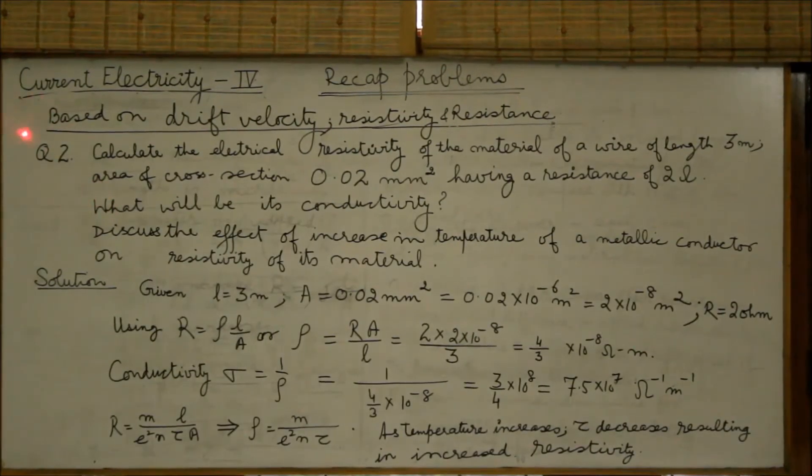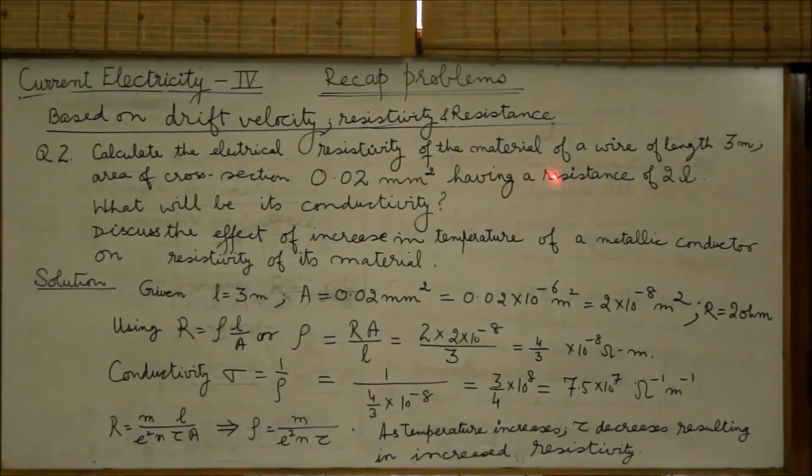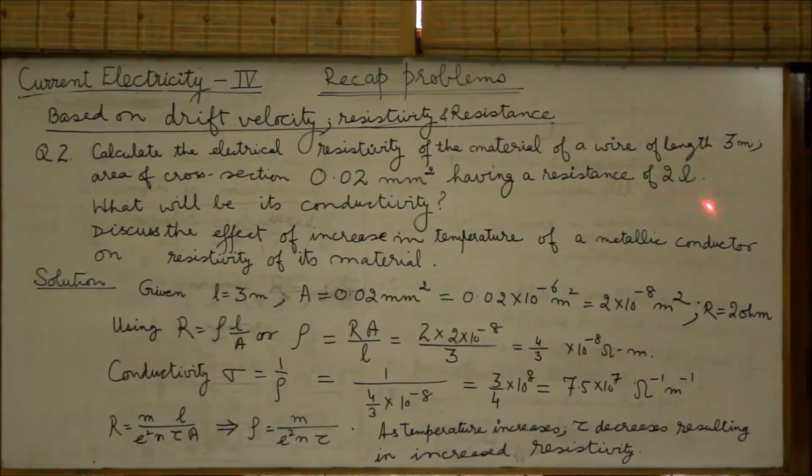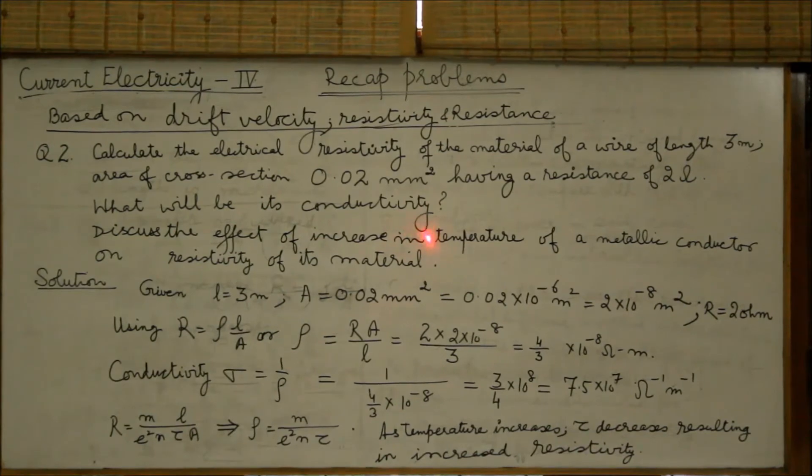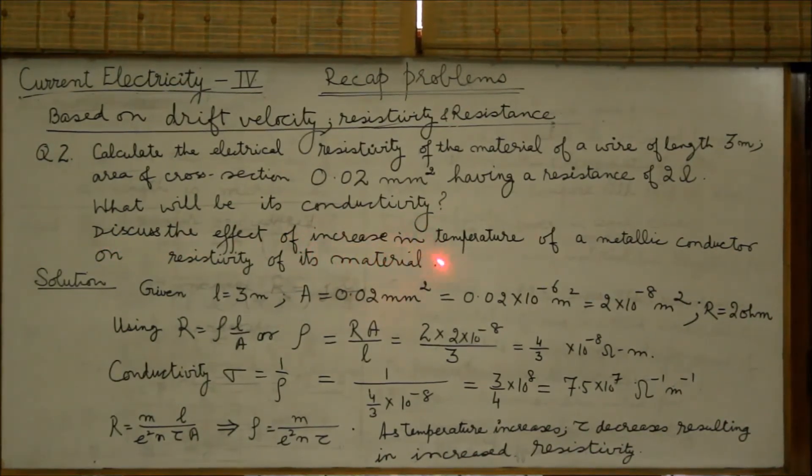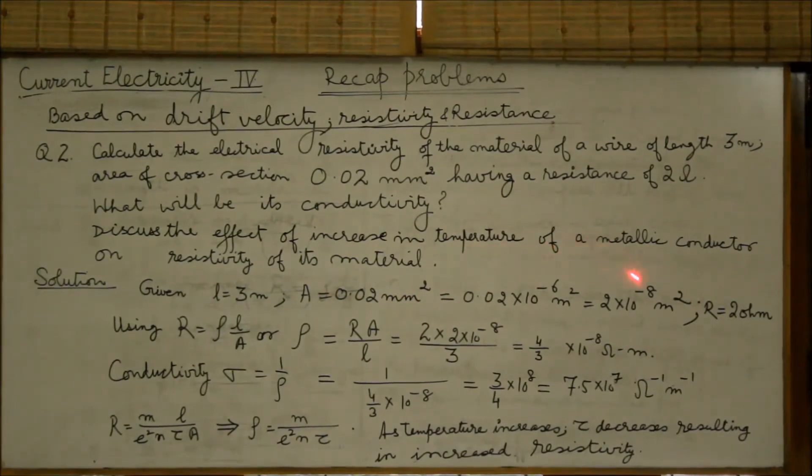Question 2. Calculate the electrical resistivity of the material of a wire of length 3 meters, area of cross-section 0.02 millimeter square, having a resistance of 2 ohms. What will be its conductivity?